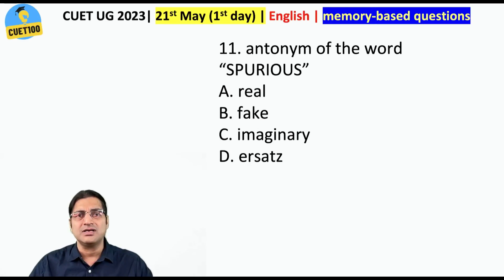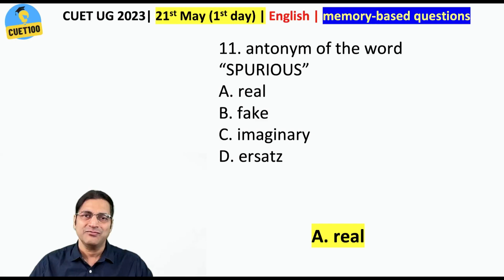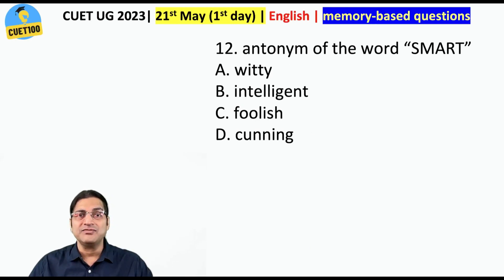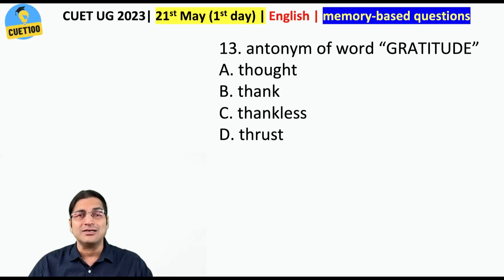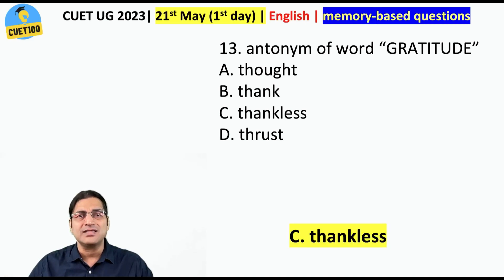Antonym of the word 'spurious' — spurious means something which is not real, so the antonym would be 'real.' Antonym of the word 'smart' — of course, 'foolish.' Antonym of the word 'gratitude' — we have already discussed its meaning — the antonym would be 'thankless.'